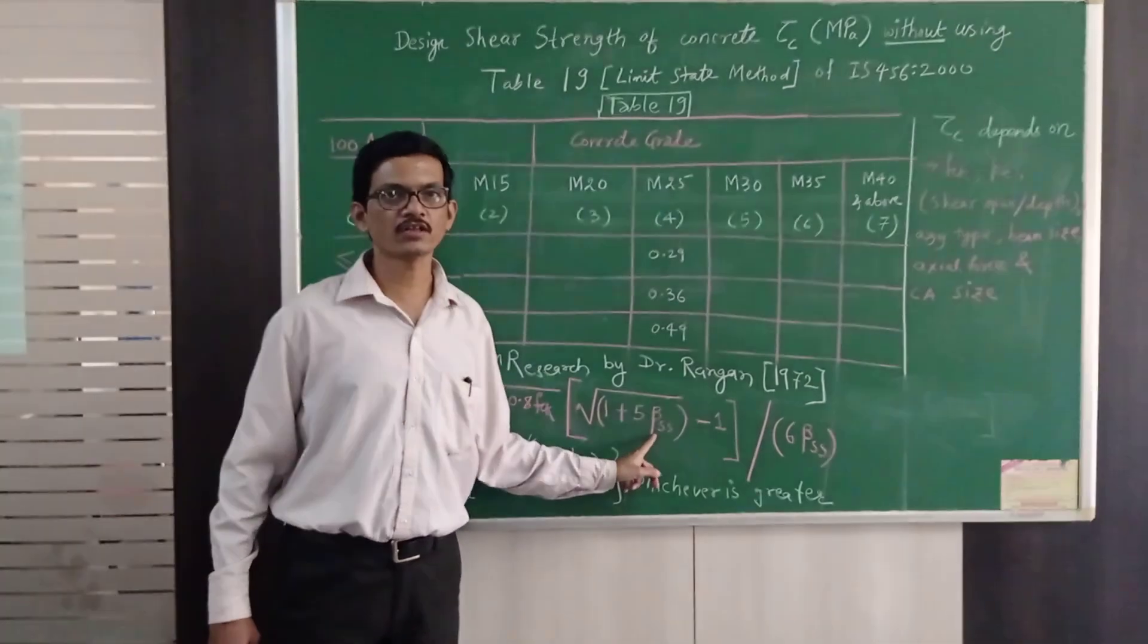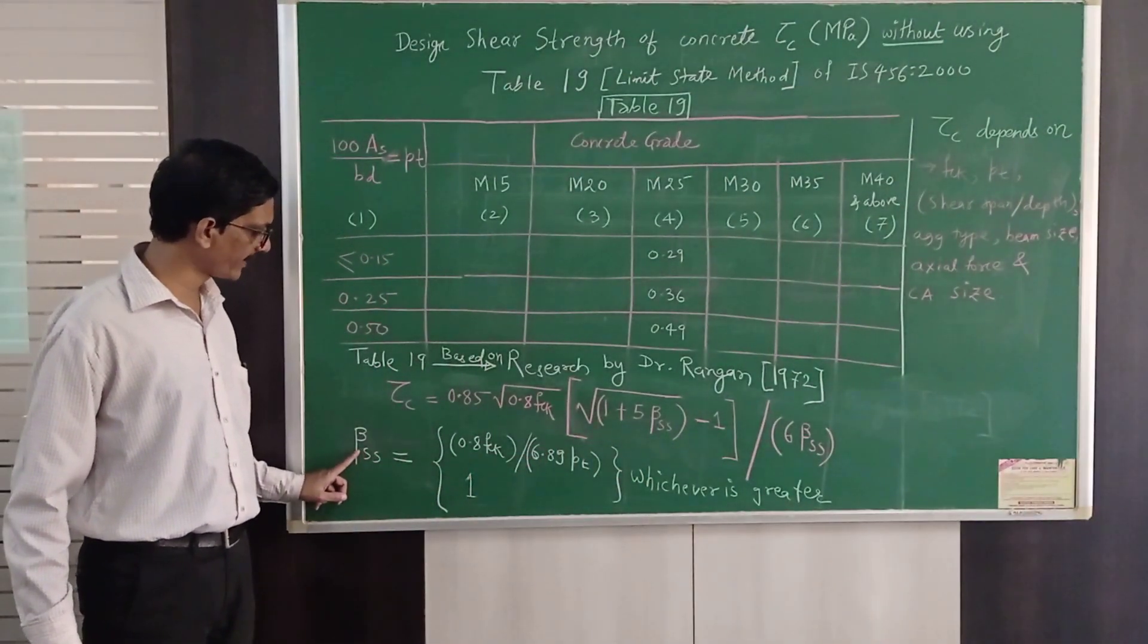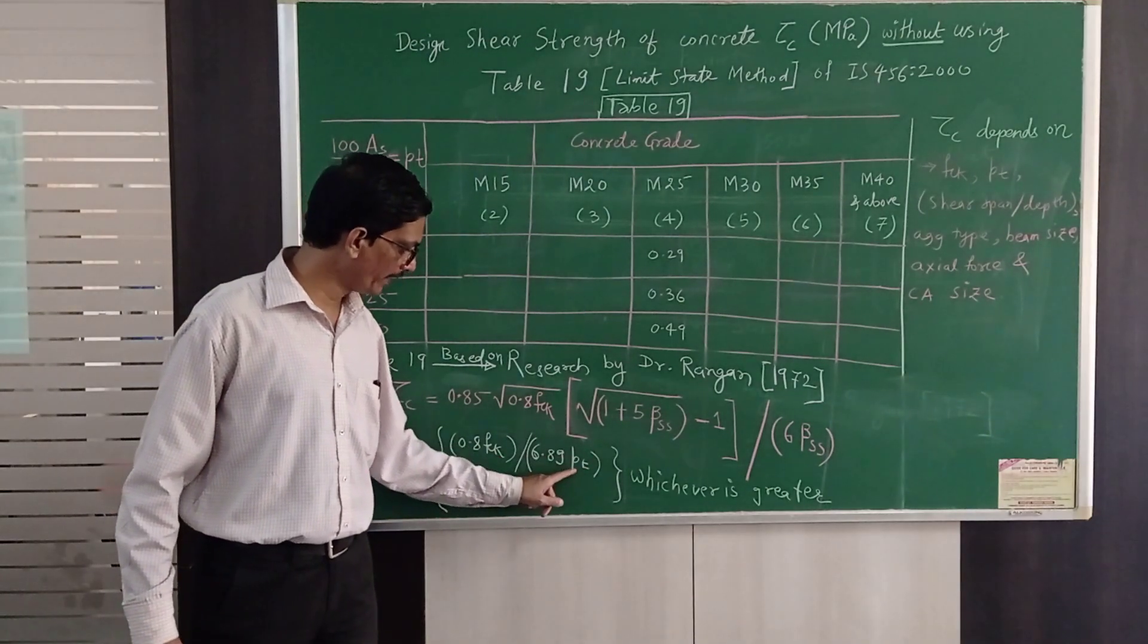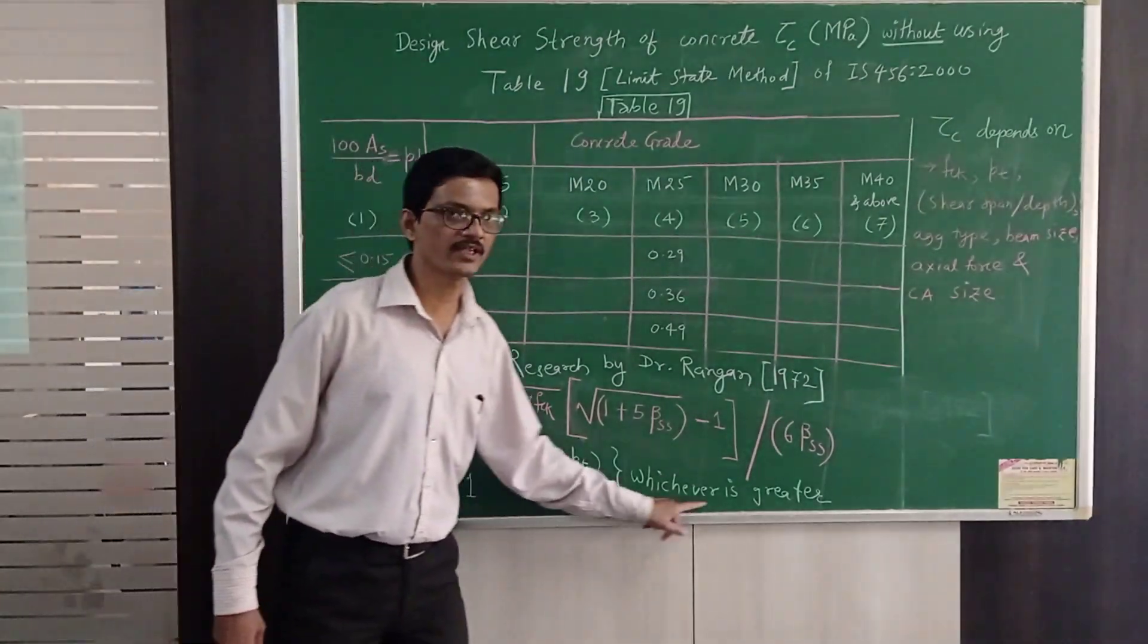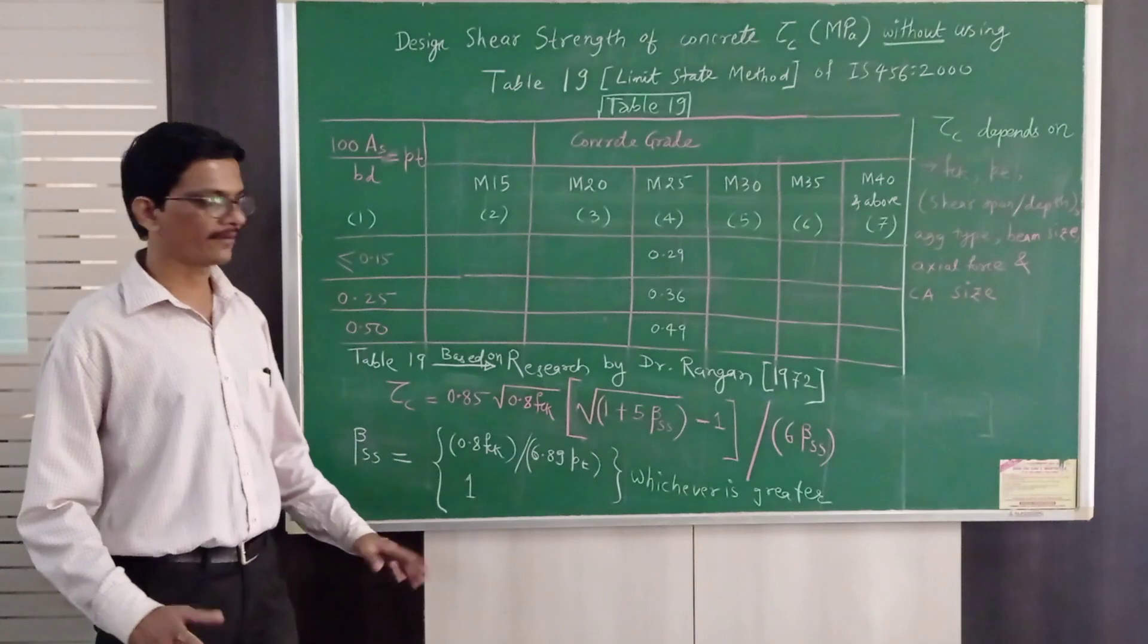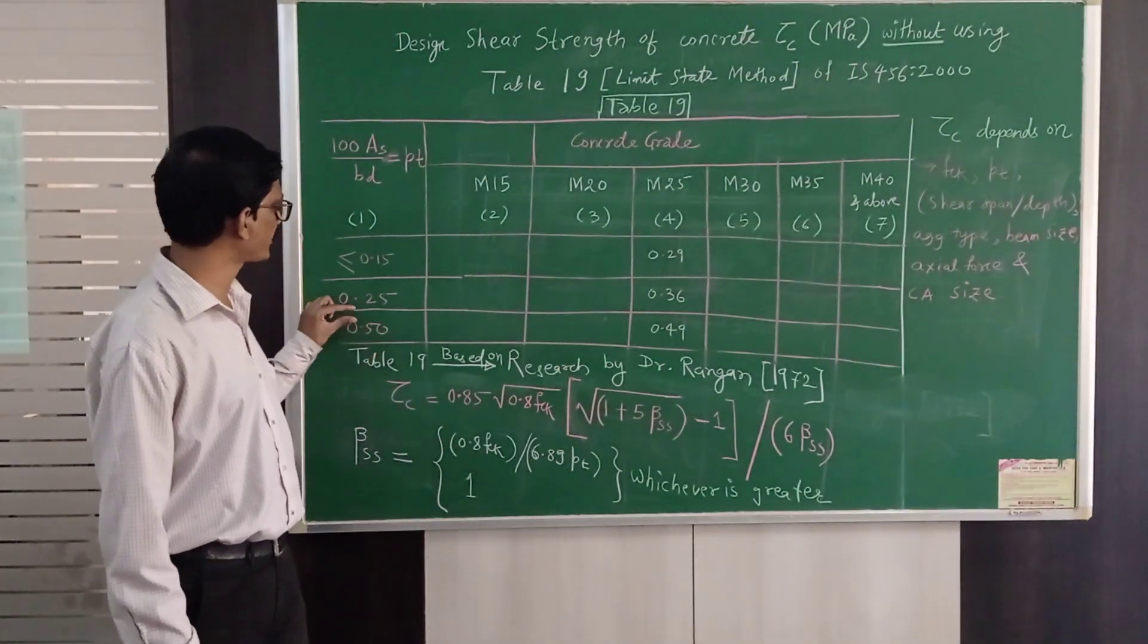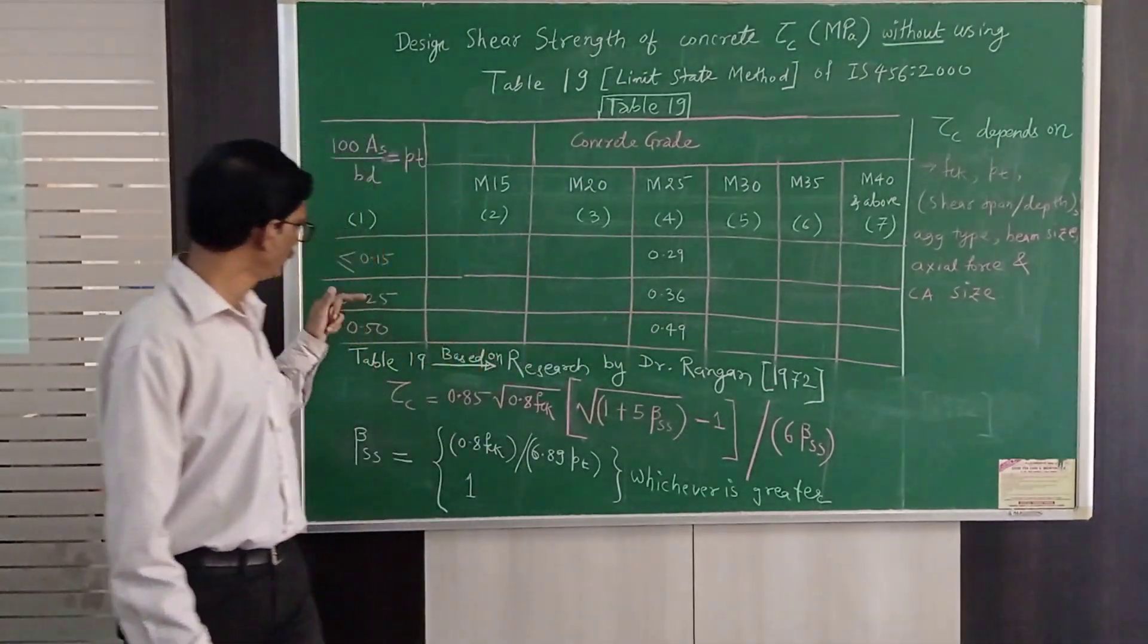So again what Dr. Rangan did that he gave the formula for beta ss as 0.8 times fck upon 6.89 into pt that is percentage of steel or 1 whichever is greater. For example suppose I have percentage of 0.32.